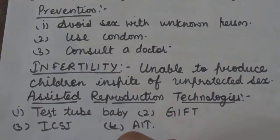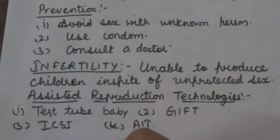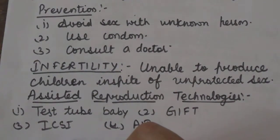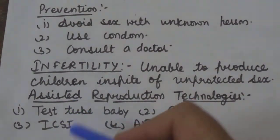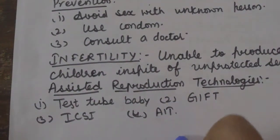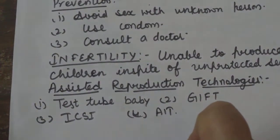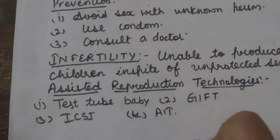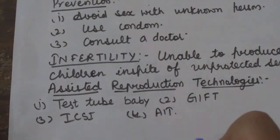Next is ICSI — Intracytoplasmic Sperm Injection. This is a specialized technique to form an embryo in the laboratory in which sperm is directly injected into the ovum placed in a nutrient medium. The zygote is then transferred by surgical method into the uterus of the female. Next is the artificial insemination technique, used in cases where the husband is unable to inseminate or has low sperm count. The sperm of the husband or donor is collected and artificially introduced into the vagina or uterus of the female.